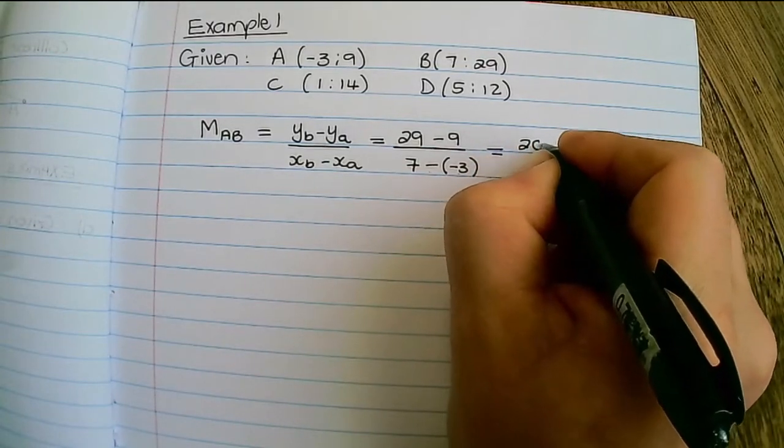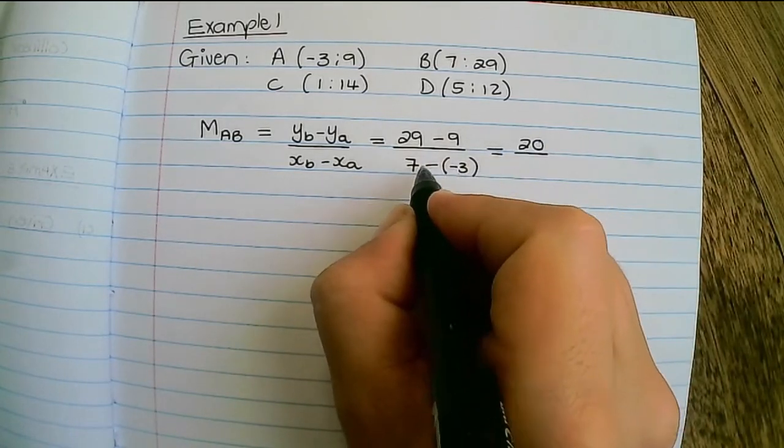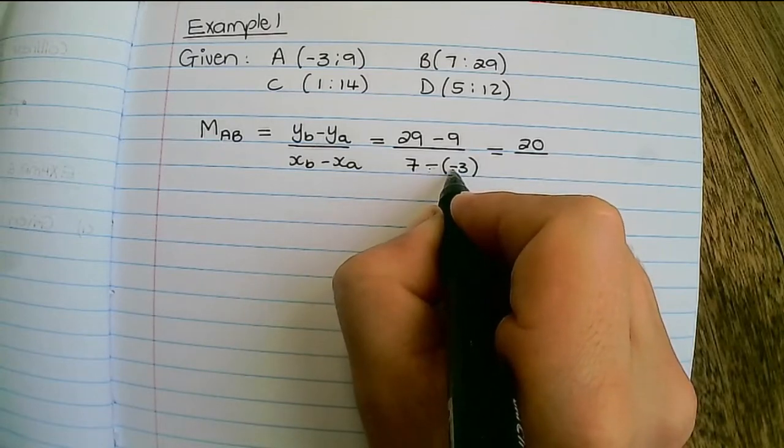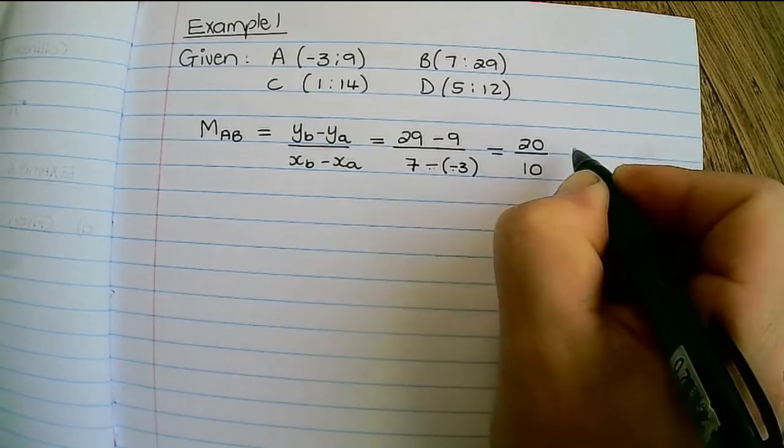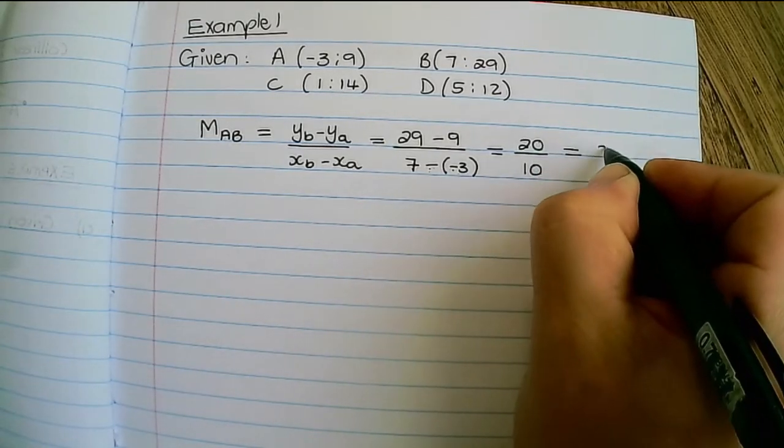So that is 29 minus 9 which is 20, and 7 plus 3 because 7 minus minus 3 becomes plus. So that is 10, and then 20 divided by 10 is equal to 2.